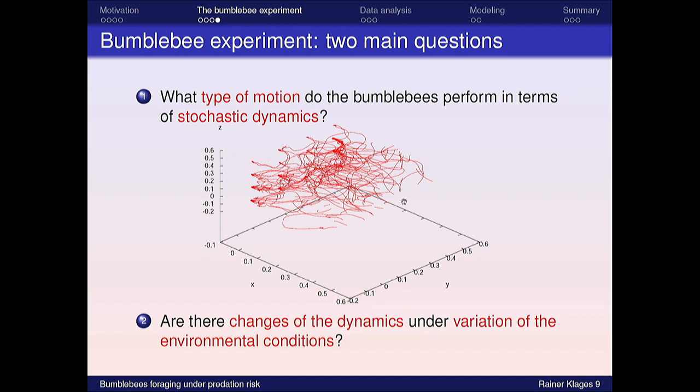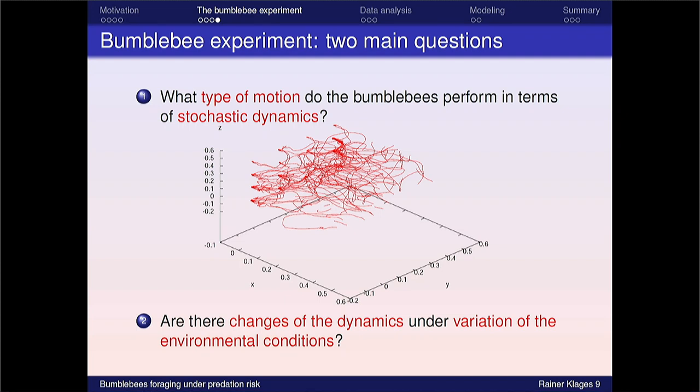As a theorist, we wanted to reanalyze the data in view of two questions. First, I'm very interested in what type of motion the bumblebees perform in terms of stochastic dynamics. I'm interested in building a stochastic model that can reproduce this kind of trajectory. But secondly, in this context, are there changes of the dynamics under variation of the environmental conditions? Certainly naturally, you would expect that if the bumblebees move without spiders on the flowers, they are quite happy because there is no risk. But if they perceive that there are spiders there, they may get nervous and change their type of motion. The question is, how do they change their motion? Can you quantify this? This was the question we were posing.